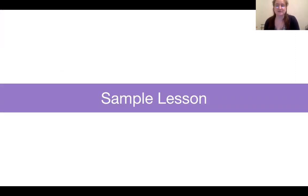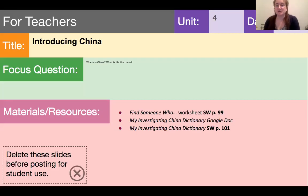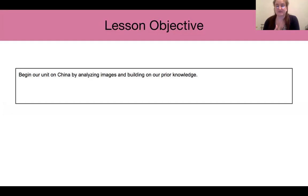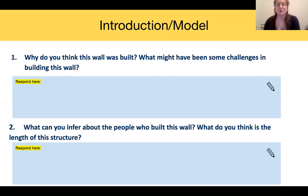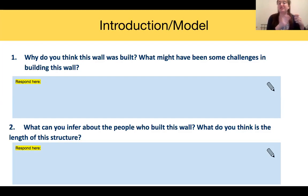I'd like to show you a sample lesson that uses a modified version of the RAN strategy. This is from the case study of China, and the lesson objective is for students to begin the unit by analyzing images and build on their prior knowledge. You start with children analyzing an image of the Great Wall of China, then you ask why they think this wall was built. What's great about the RAN strategy is that you start with what children think — it differentiates from what do you know as a fact and becomes what do you think is true.